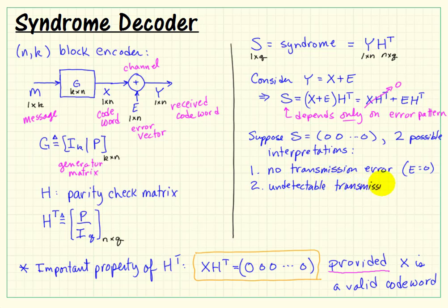Well, if you can't tell the difference between no transmission error and something that's somehow flipped X into a valid codeword, then there's nothing you can do about it. It's undetectable.